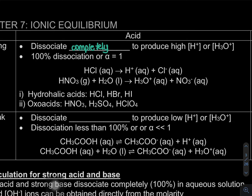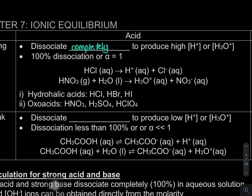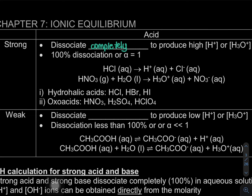Because strong acid dissociates completely, we use a single full-headed arrow in the equation — the same arrow we normally use to write reactions. So for strong acids, remember: single one-headed arrow.